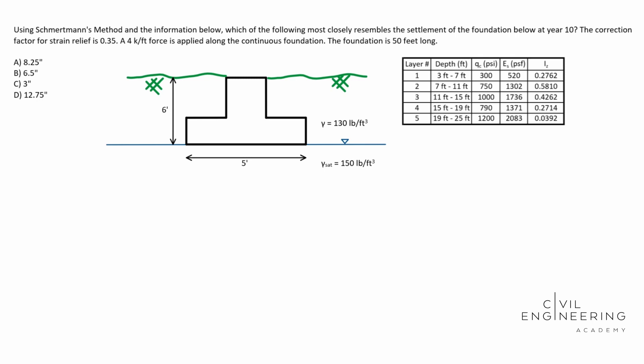Today we have a soil mechanics problem, in particular a settlement problem. Using Schmertmann's method and the information below, which of the following most closely resembles the settlement of the foundation below at year 10? The correction factor for strain relief is 0.35. A four kip per foot force is applied along the continuous foundation. The foundation is 50 feet long. We have five different layers that we're splitting this soil up to, and you get that information off CPT data.